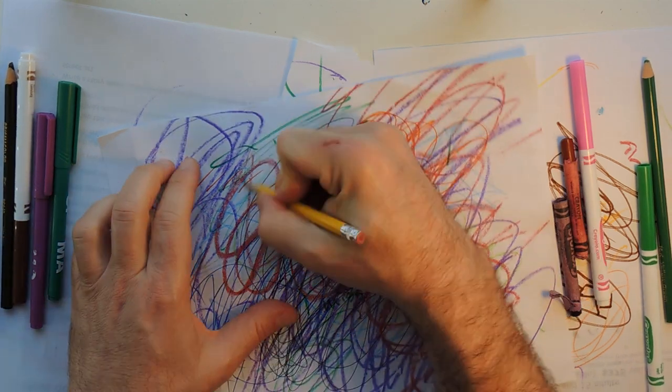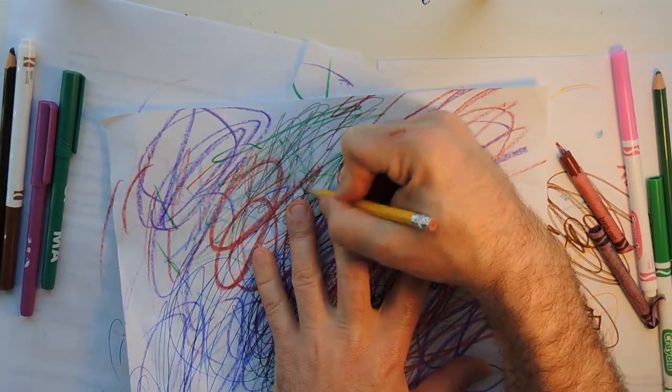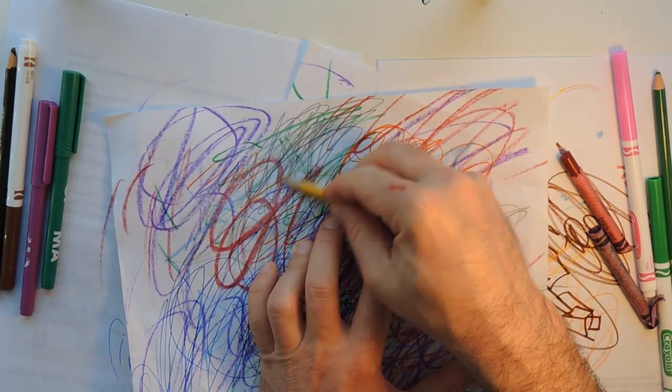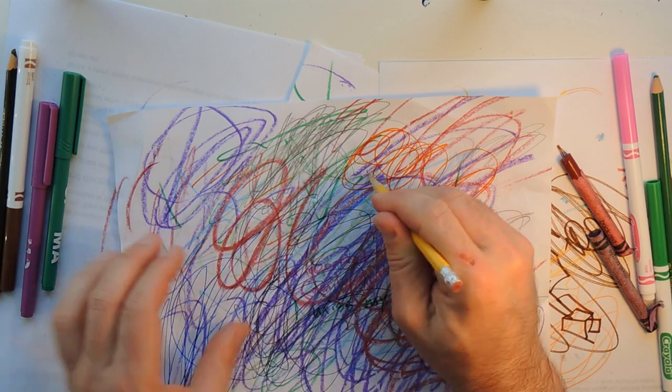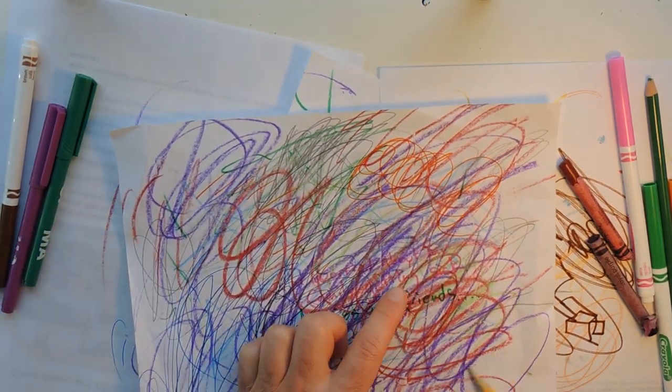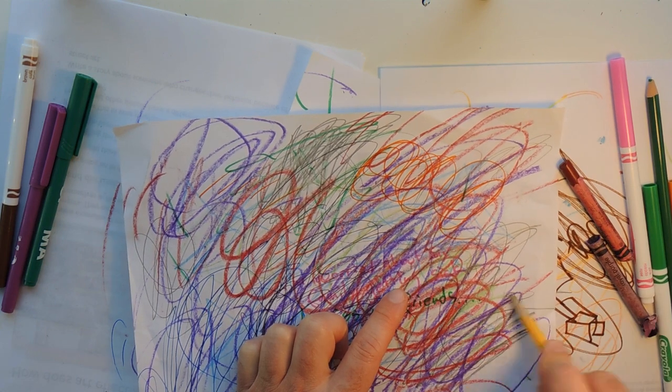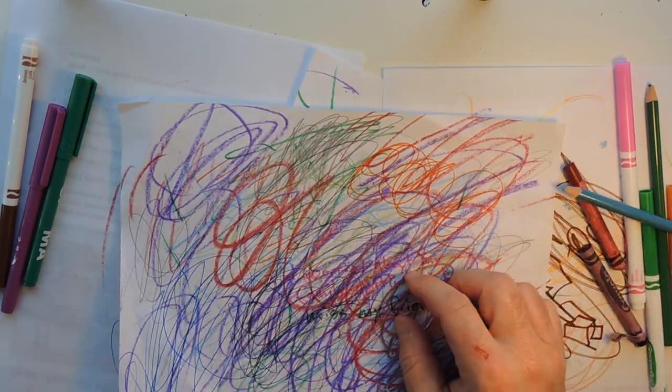And there's different types of scribbling you can explore. Try just from your little fingertip or the edge of the pencil. And notice how the materials interact with each other, the markers and crayons. Sometimes the marker doesn't draw on top of the crayon. Sometimes a pen can scratch through the crayon or go over the marker.